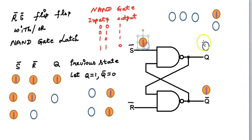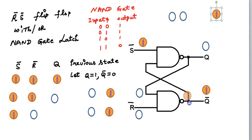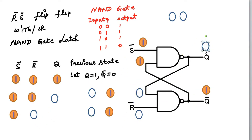Next, if the input is S complement = 1 and R complement = 0, and the previous state was Q = 0, Q complement = 1. The input 0, 0 gives 1. That 1 comes here, and 1,1 gives 0. This again has a stable state: Q will be at 0.